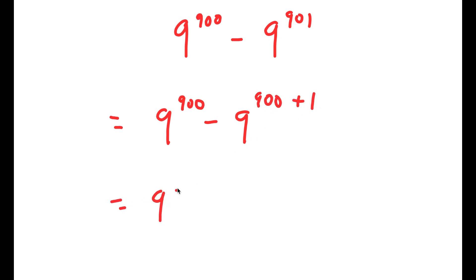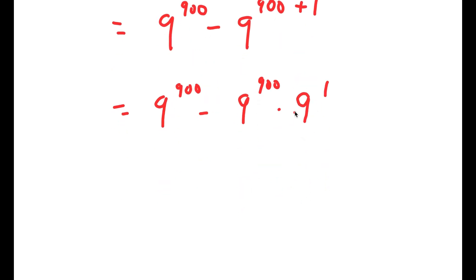Which turns into 9 to the power of 900 minus 9 to the power of 900 times 9 to the power of 1 using property of exponents.